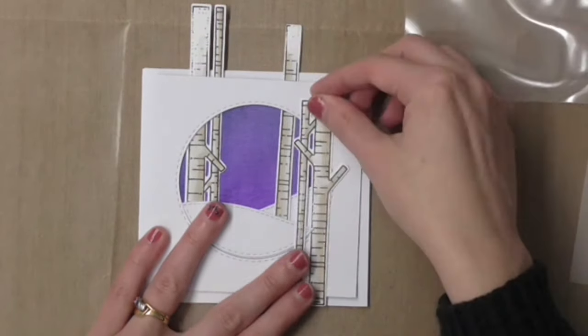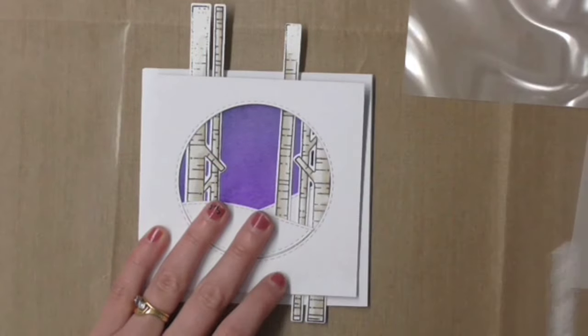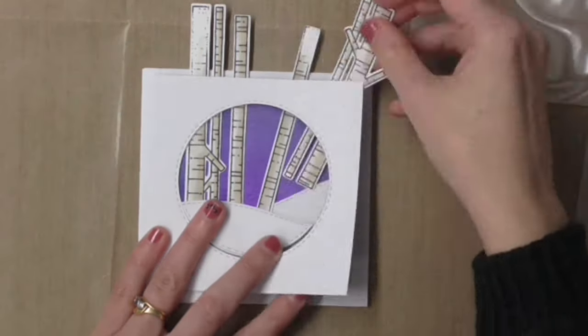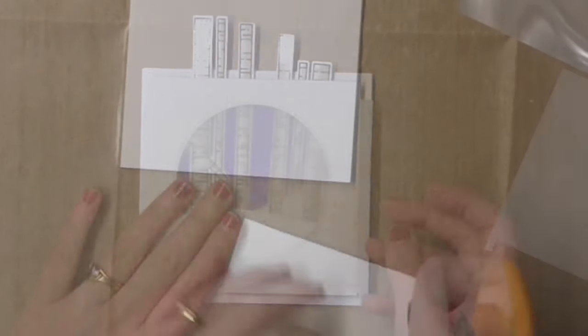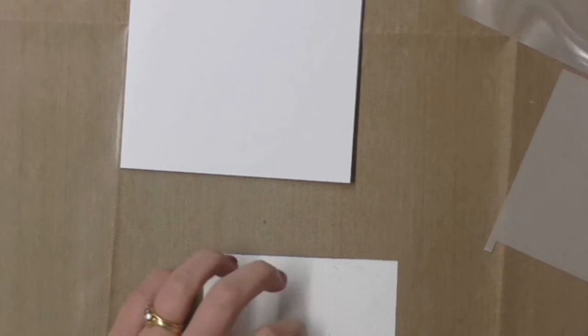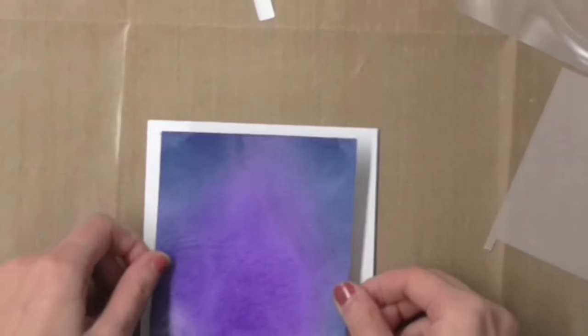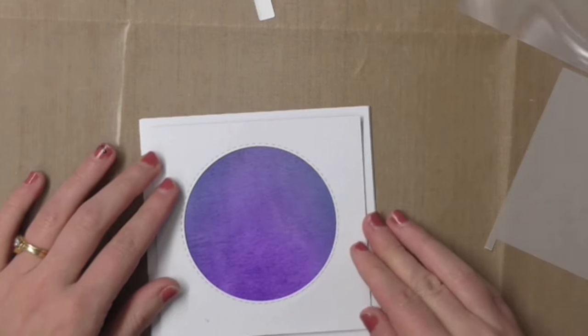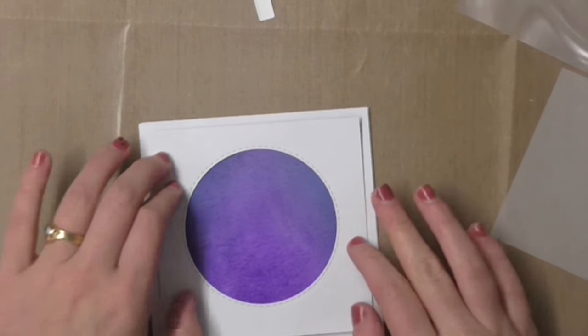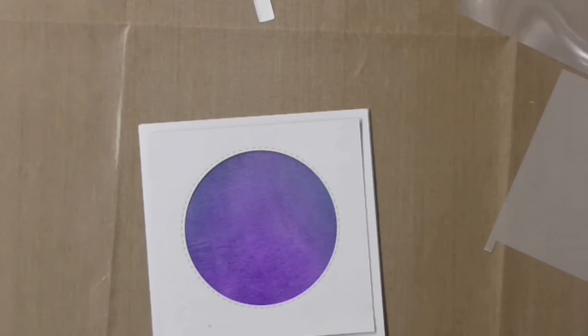And I'm tracing around the inside of the aperture with a pencil and this will help me position where the little snowy mounds will go and also figure out exactly where I want to put the little LED.